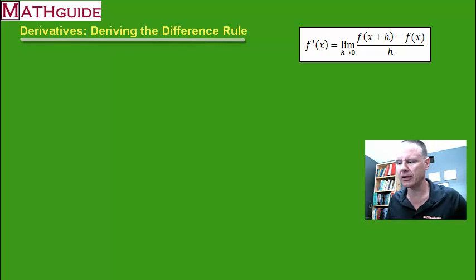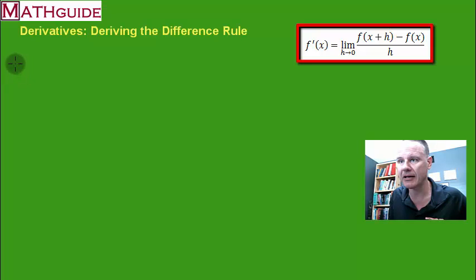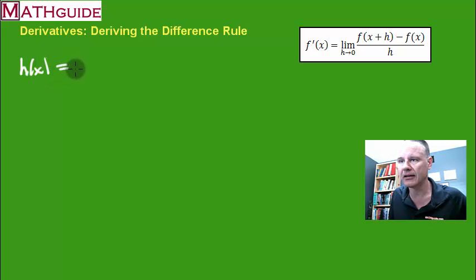You'll notice here that I have the definition of what a derivative is. That's going to come in handy in a moment. So if we were to take a function h of x, and let's say h of x is comprised of two functions that are being subtracted. In other words, it's like we're putting functions together to make a larger, more detailed function.